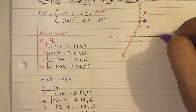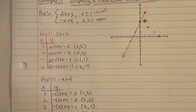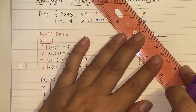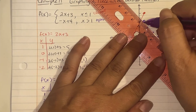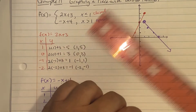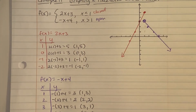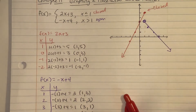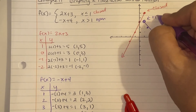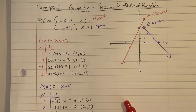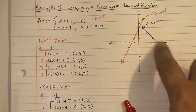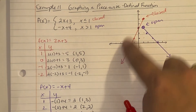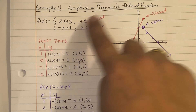We extend the graph to the right toward positive infinity. The first piece is closed at x equals 1, and the second piece is open at x equals 1. All x values here satisfy the bottom equation; all x values for the top equation include x equals 1. For the second piece, x equals 1 makes it a false statement — so x equals 1 belongs only to the first equation.